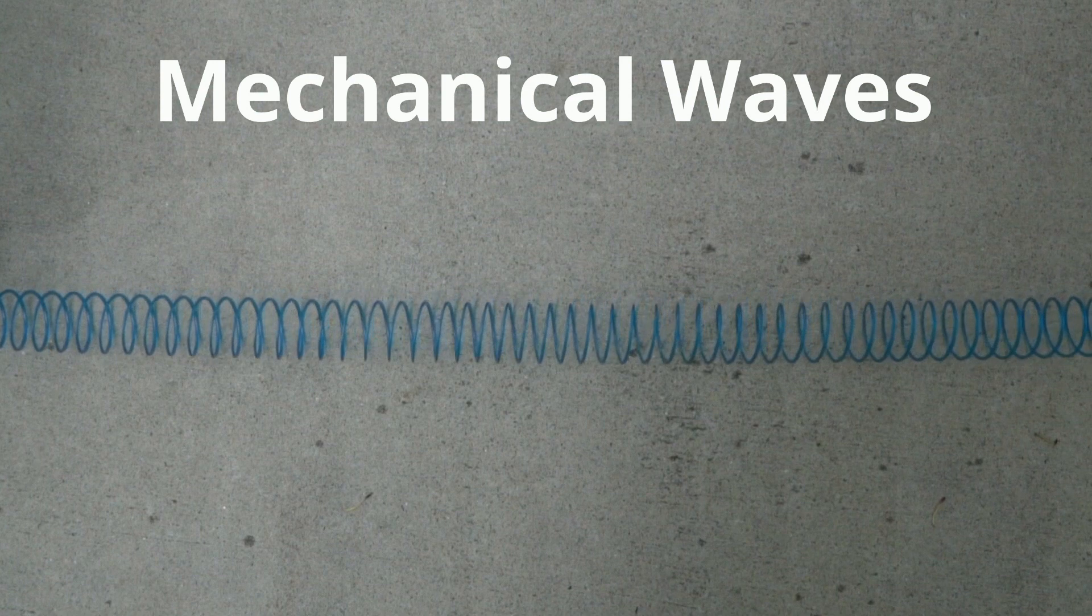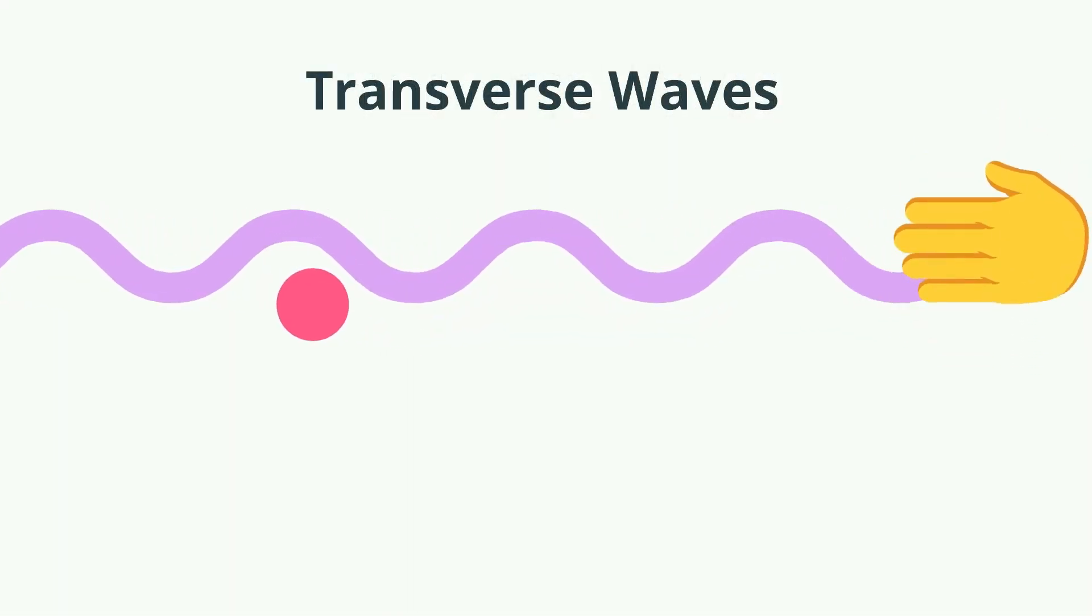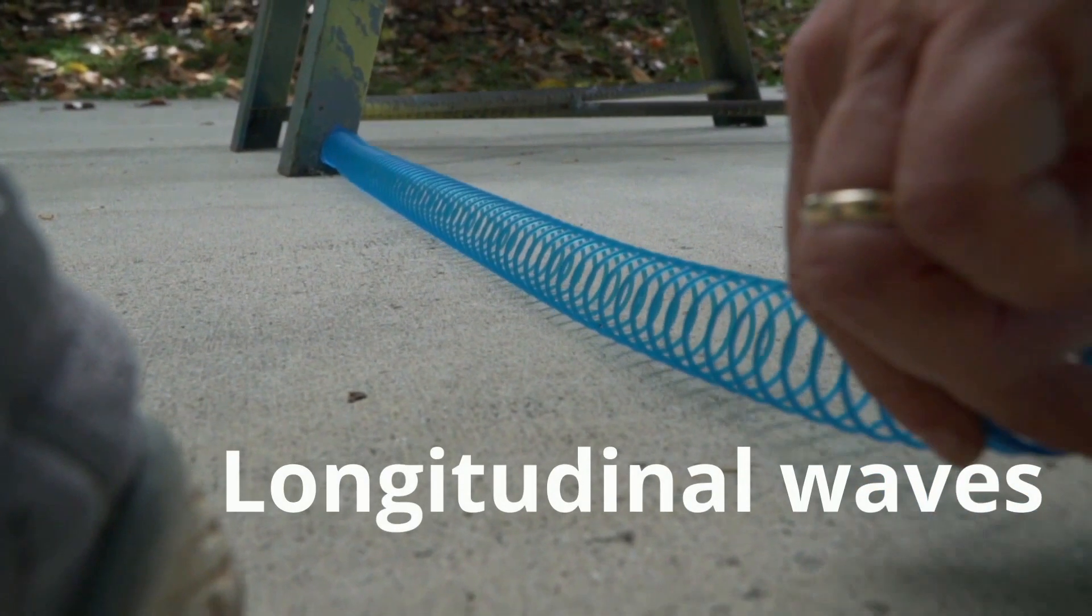In this video, I'll discuss two types, transverse and longitudinal, also called compressional waves.